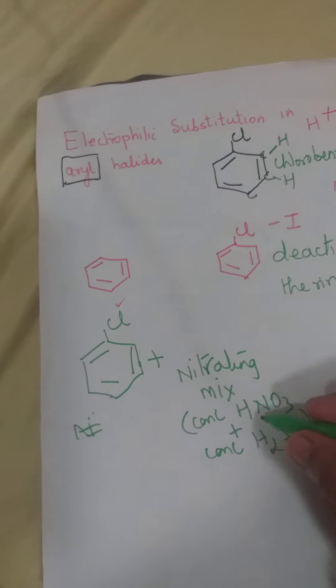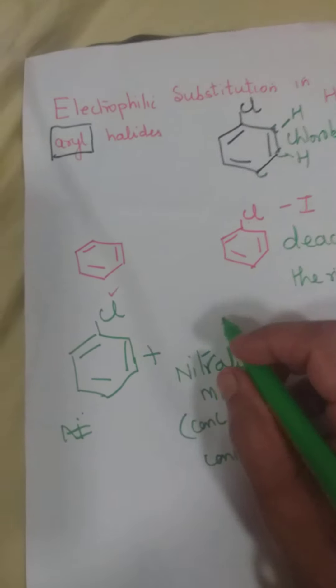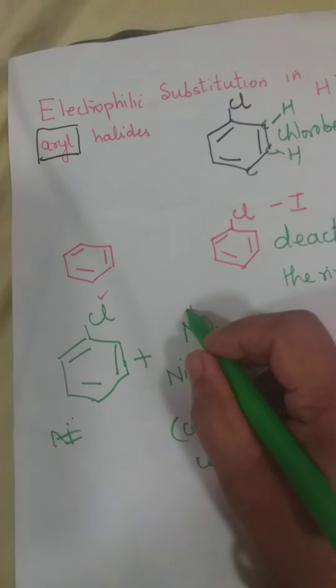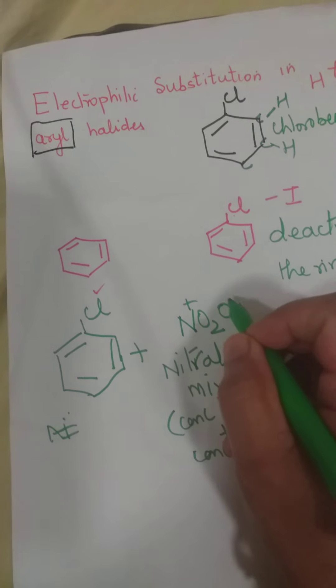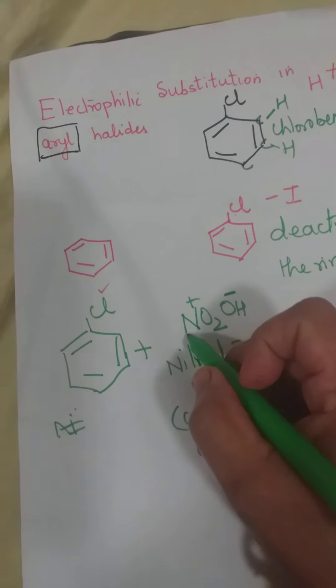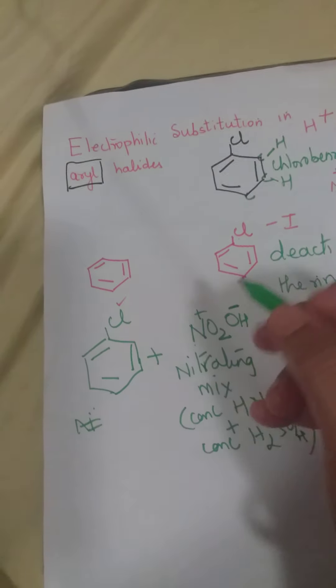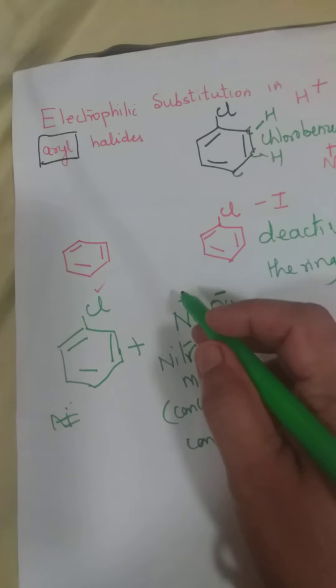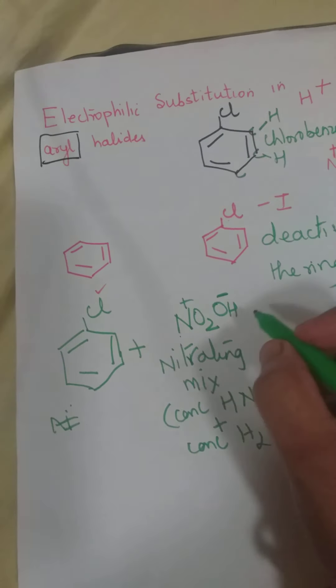Nitrating mixture is a mixture of concentrated, concentrated nitric acid and concentrated sulfuric acid. Yeh kyun aise dalte hai? Jab aap, dono mix karoge hai, toh iska kya banta hai? Is mein se banta hai, yeh HNO3 mein se banta hai, NO2 plus aur OH minus. Hai toh HNO3 hi, but it will separate as NO2 plus and OH minus. Ab, yeh part jo hai, electrophilic ho jata hai.